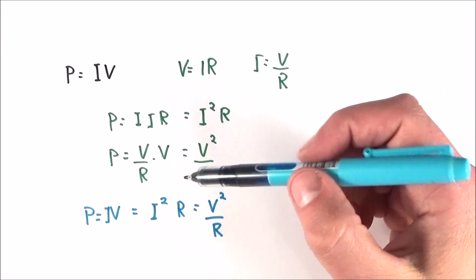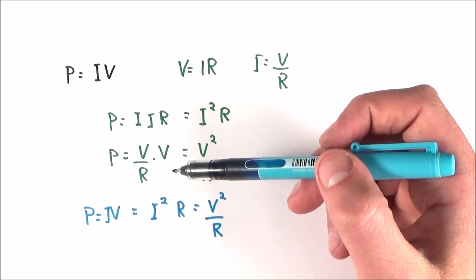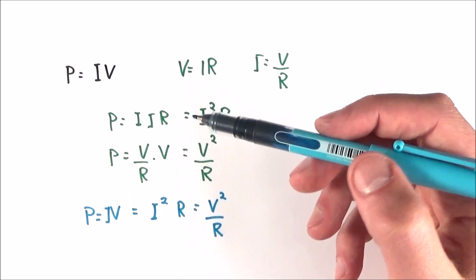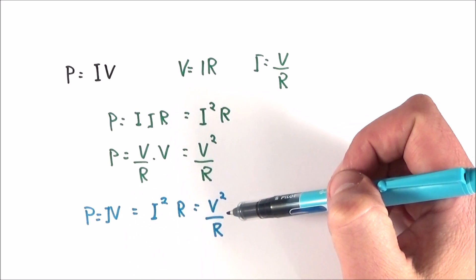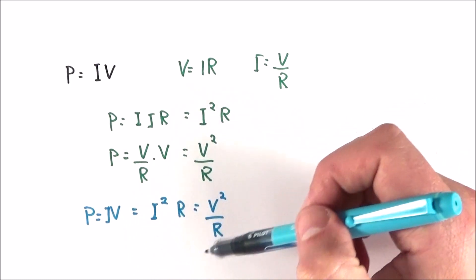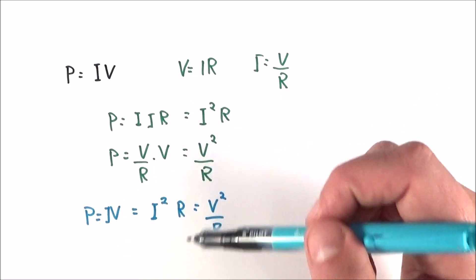So here we have my three equations for electrical power. Remember, power is still the rate of energy transfer, but we can calculate it for a circuit as either I times V, I squared times R, or V squared divided by R. And depending on what information you've been given in the question, then all of these equations here are perfectly appropriate.